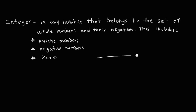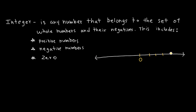And if you still don't have an idea of what an integer is, let's observe integers using a number line. Starting from 0, the origin, the right side of the number line shows positive numbers, and the left side shows negative numbers.